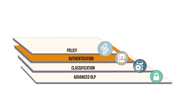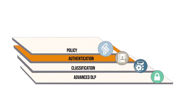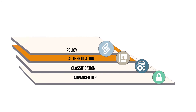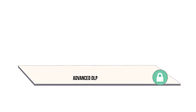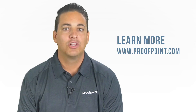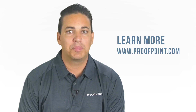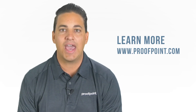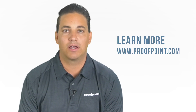The final layer is data loss prevention, or DLP. If a malicious email somehow gets through all of your other layers and manages to trick someone in your organization, DLP can make sure that no sensitive information leaves your organization. Learn more about BEC and Proofpoint Email Fraud Defense at Proofpoint.com. Thank you.